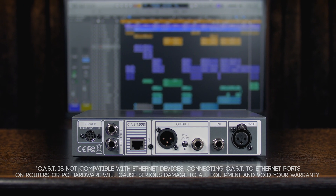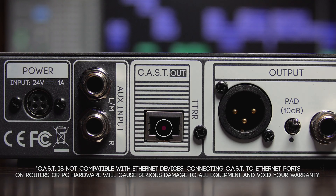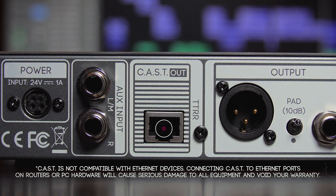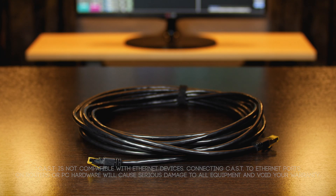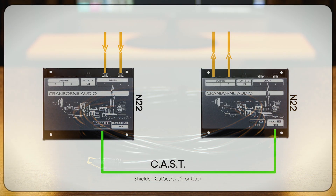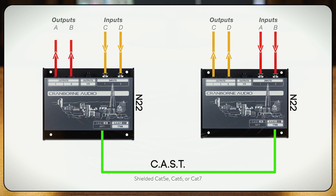The CAST port on the back of Kandon EC1 is a four-channel balanced analogue connection that uses shielded Cat5e, Cat6 and Cat7 cable to send audio between two devices over distances up to 100m.